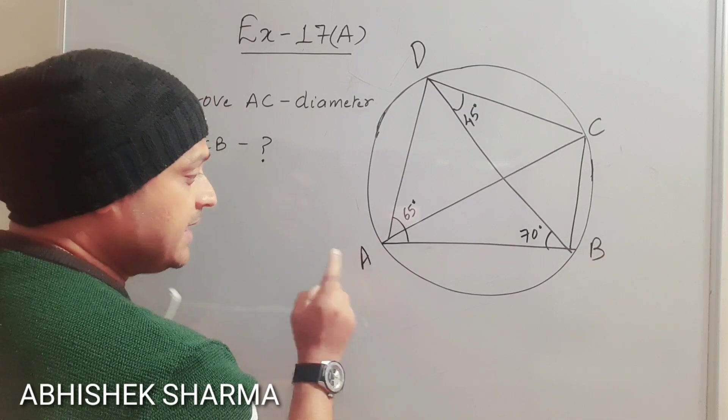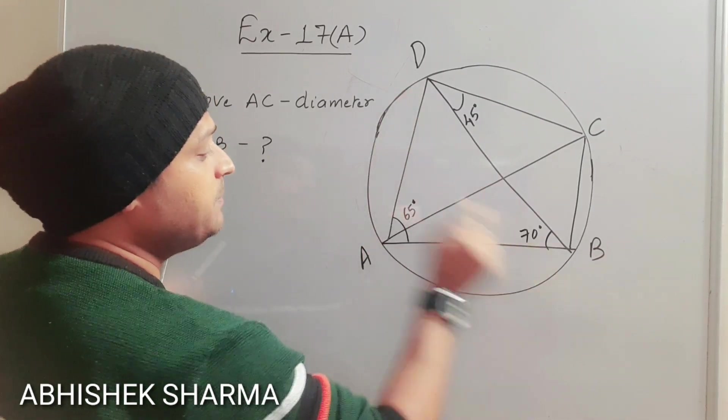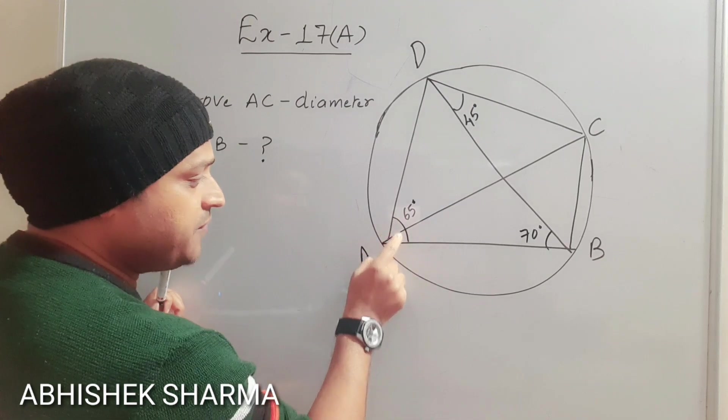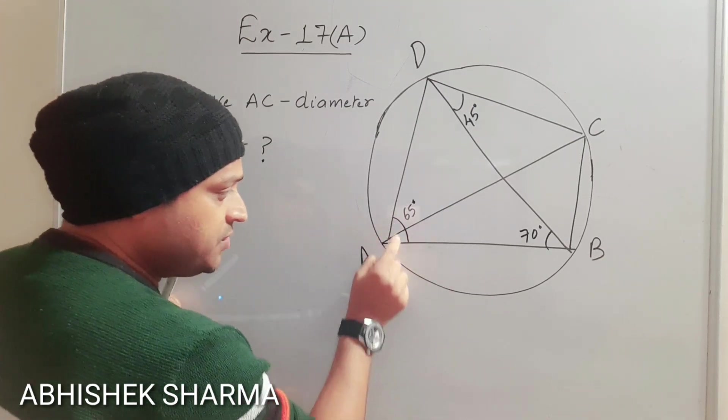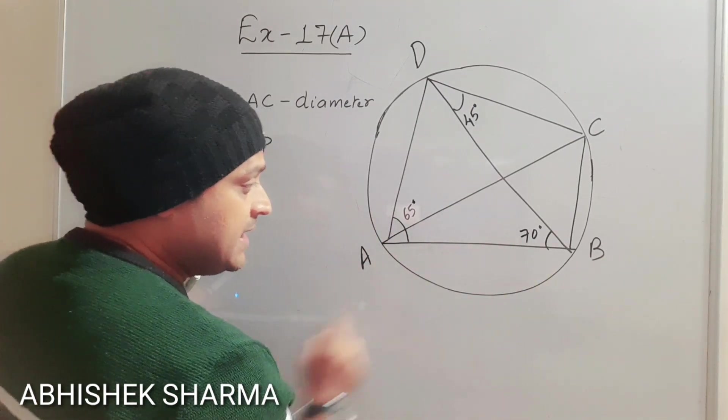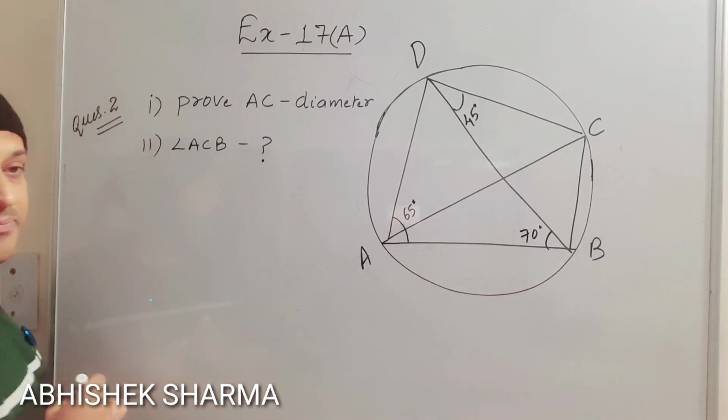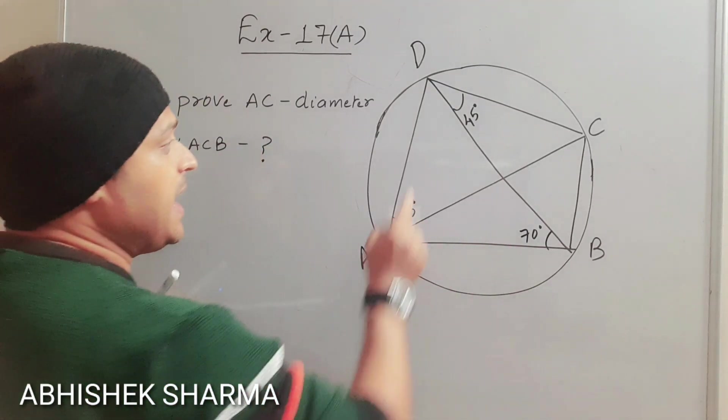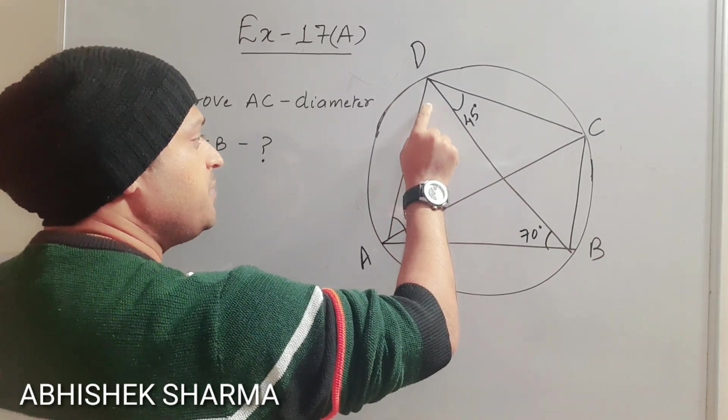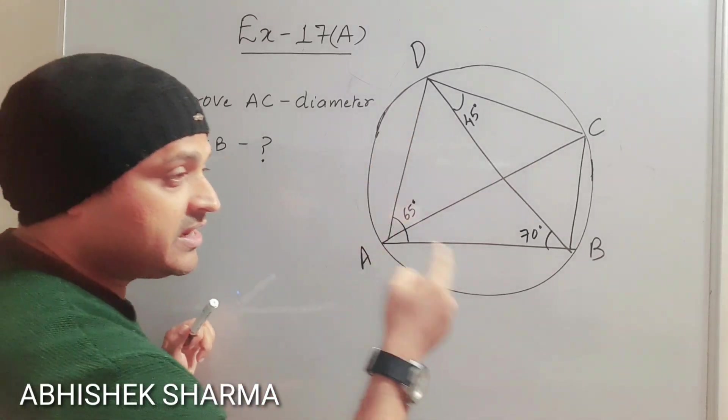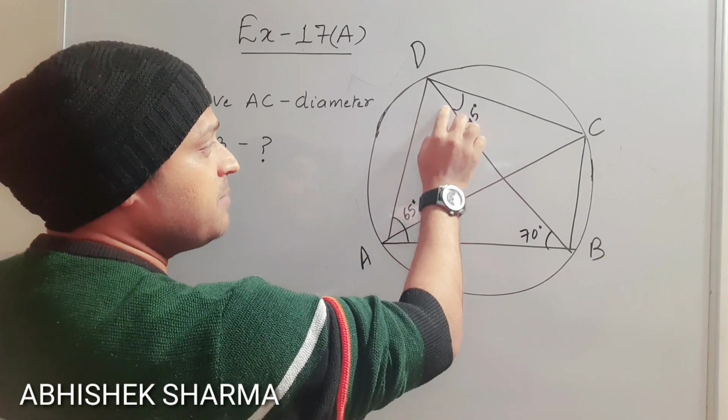Let us see this triangle ADB. So this is 65 my dear children. This is 65, that is 70. 65 and 70 will be 135. And subtract it from 180. 180 minus 135 is 45. So this will become 45.